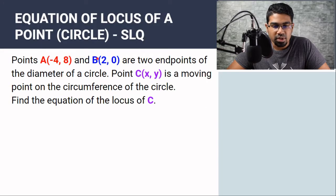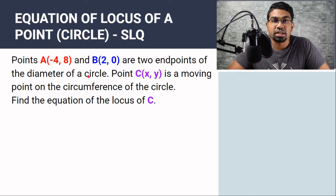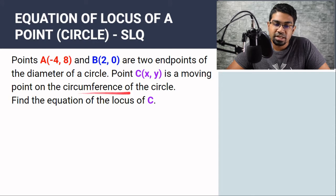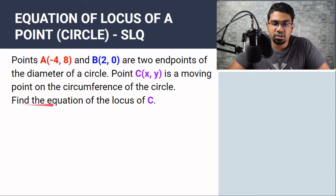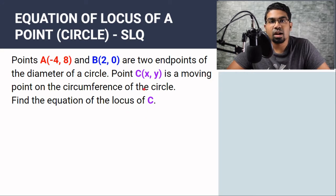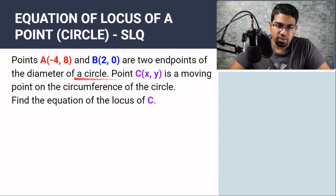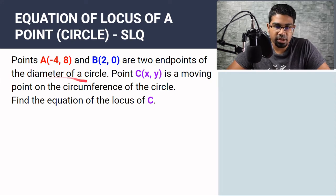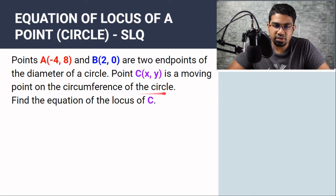Points A and B are two endpoints of the diameter of a circle. Point C is a moving point on the circumference of a circle. Find the equation of the locus of C. When dealing with questions like this, it's always helpful to do a sketch first. So let's use all the information given to us. We have two endpoints of the diameter of a circle, and C is on the circumference of the circle.